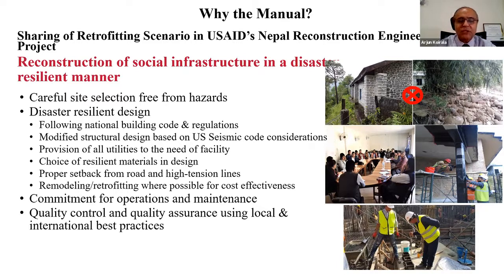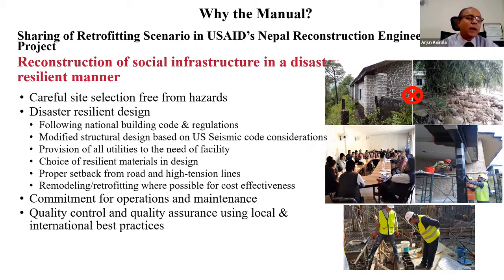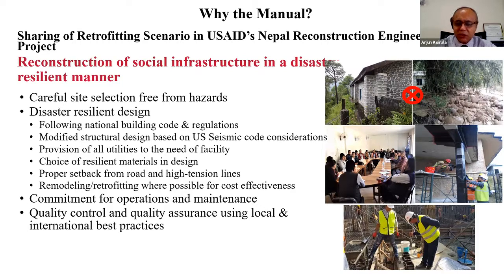One needs to incorporate the commitment of communities for continued operations and maintenance, which is also touched upon by this manual at the later phase. The manual has seriously looked into the need for quality control and quality assurance, and tries to bring in local and international best practices, which we also brought into our reconstruction projects. To have this social infrastructure built with the standard and quality anticipated, there are a number of actors that interface with each other, requiring similar understanding, knowledge, and practice.